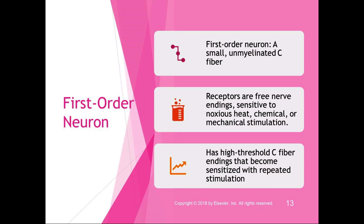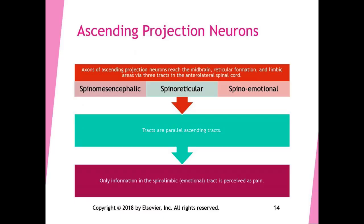The first-order neuron in the divergent pathway is a small, unmyelinated or less-myelinated C fiber. The receptors are free nerve endings sensitive to noxious heat, chemical, or mechanical stimulation. These high-threshold C fiber endings become sensitized with repeated stimulation — that's why when you stub your toe, it hurts right away and then throbs for three days, so sensitive you can barely touch it. The first pain is spinothalamic A-delta; the later, lasting pain is those sensitized C fiber endings.